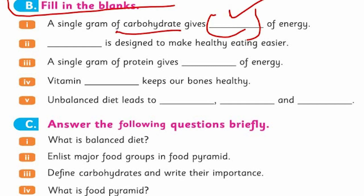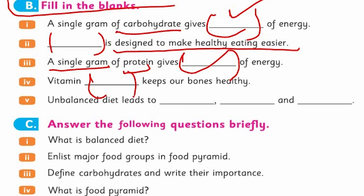Carbohydrate is good for energy. Then, what is designed to make healthy eating easier? Then single gram of protein, which is the protein that we have talked about. What is the vitamin? What is the balanced diet? The diet nutrients are in the diet. You can see it.